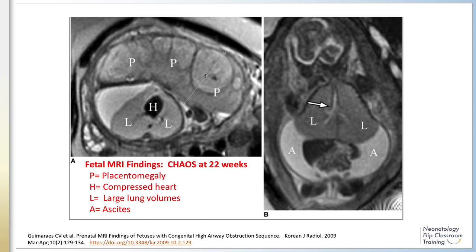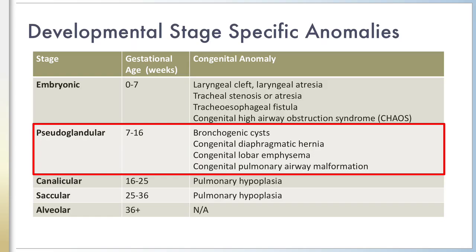In Figure B on the right, a coronal T2-weighted image, a dilated airway highlighted by the arrow and significant ascites are also seen.